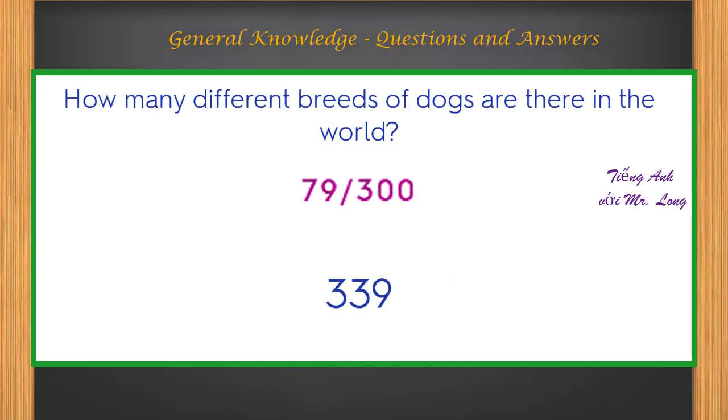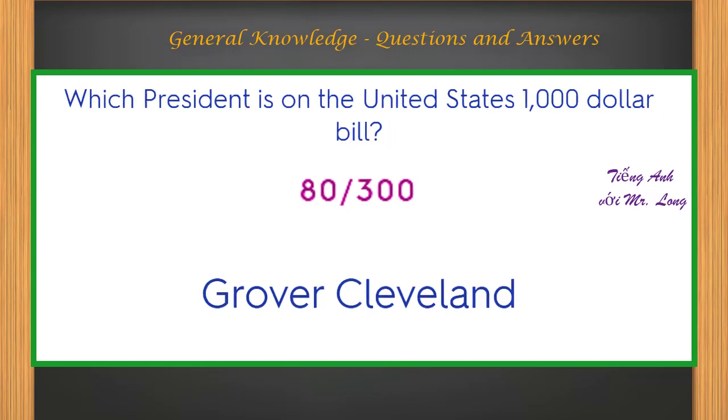How many different breeds of dogs are there in the world? 339. Which president is on the United States $1,000 bill? Grover Cleveland.